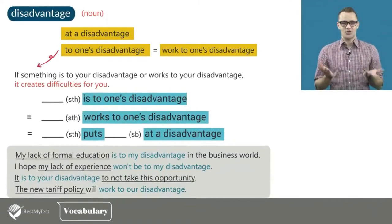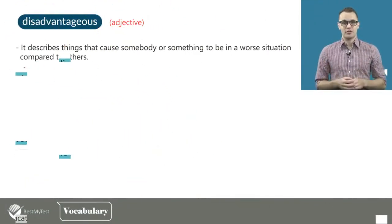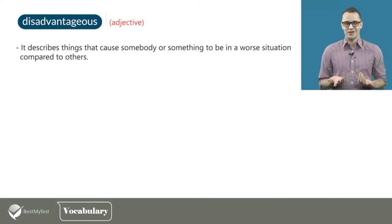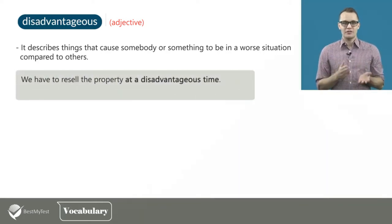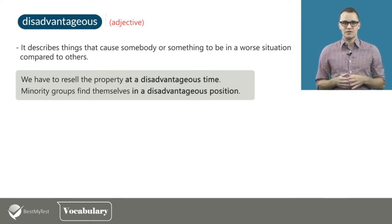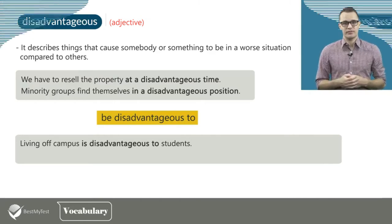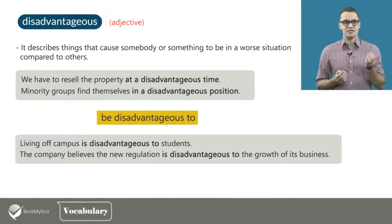Now you know how to use the word disadvantage. Let's talk about its adjective form, disadvantageous. Disadvantageous describes things that cause somebody or something to be in a worse situation compared to others. For example: we have to resell the property at a disadvantageous time. Minority groups find themselves in a disadvantageous position. We also often see the phrase be disadvantageous to, as in: living off campus is disadvantageous to students, and the company believes the new regulation is disadvantageous to the growth of its business.